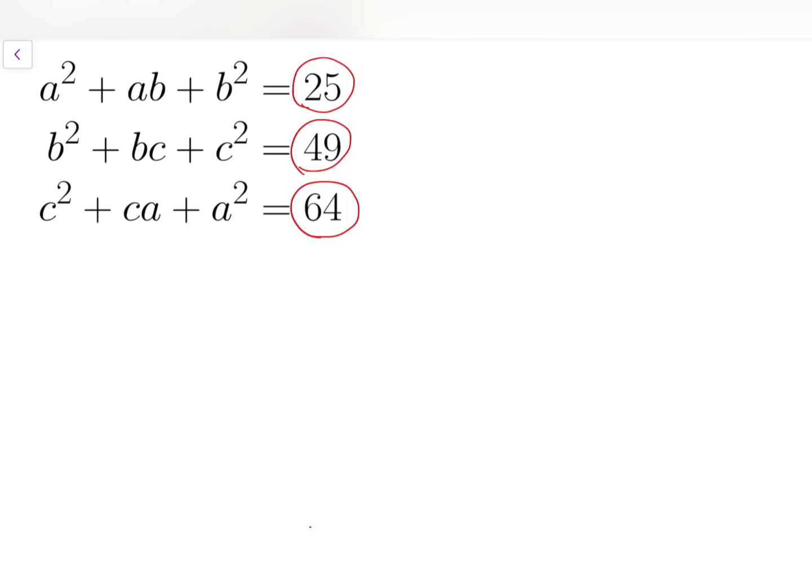all of these numbers are perfect squares. I have a gut feeling that cosine law might work. So in fact, I can just construct a few triangles.